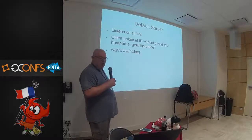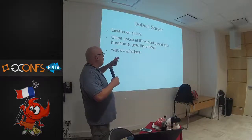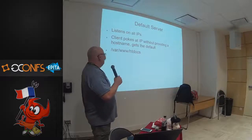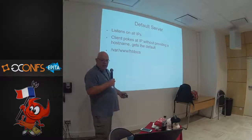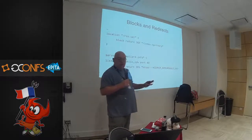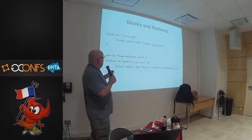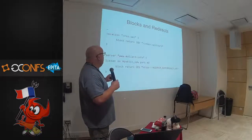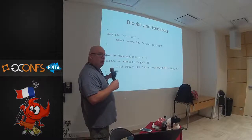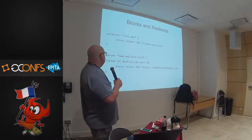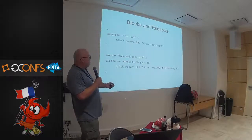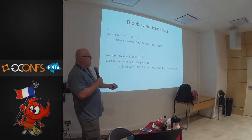There is a default server that listens on all IPs of the host by default. If a client does a netcat to port 80 and a GET, they get the default server, which is in the htdocs directory. HTTPD makes heavy use of blocks and redirects. There is no rewrite — there is no Perl-style mod_rewrite — and this is a feature. With blocks and redirects you can transparently redirect from port 80 to the TLS version of the website.